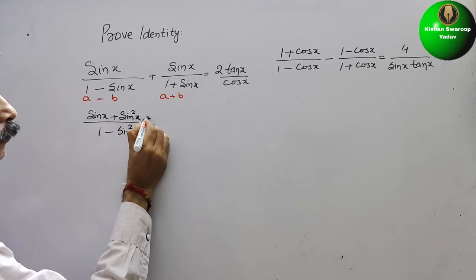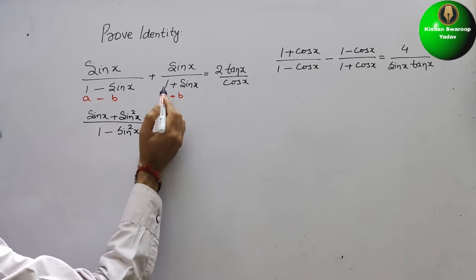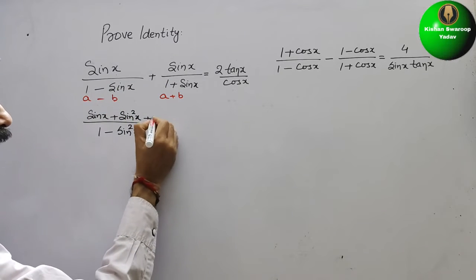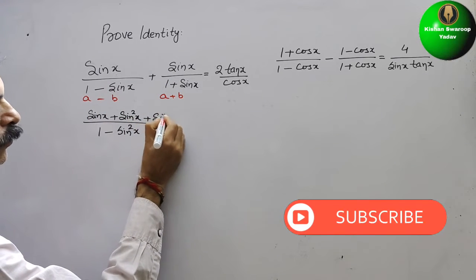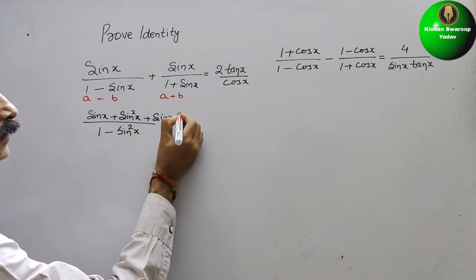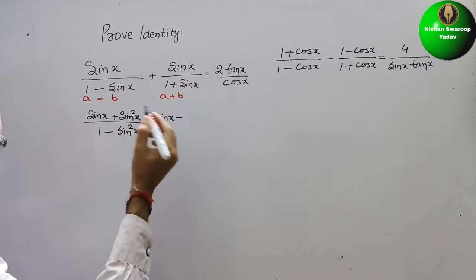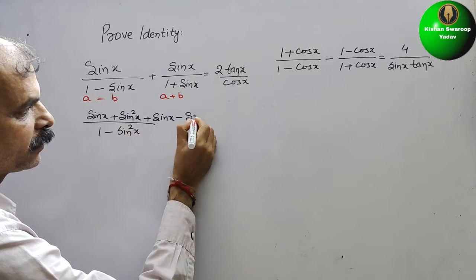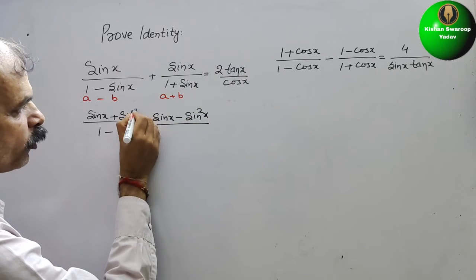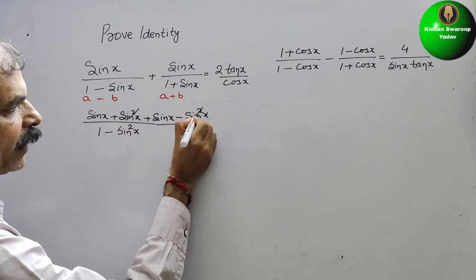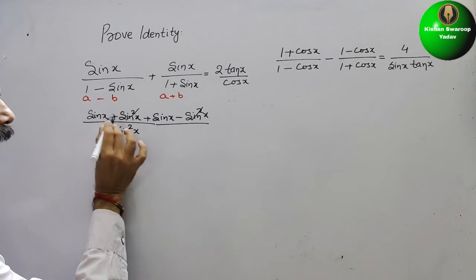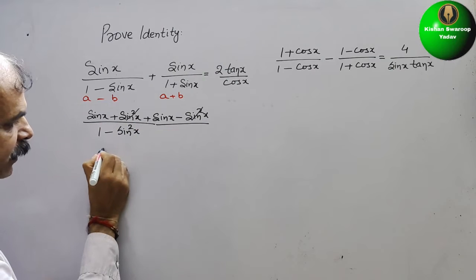Next, multiply the second term. So sin x × 1 = sin x, and minus sin x × sin x = sin²x. Now you can see the sin²x terms cancel out. So sin x + sin x = 2 sin x.